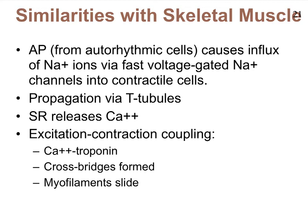We will look at those auto-rhythmic cells in the next video. When the action potential from the auto-rhythmic cells causes depolarization in our contractile muscle cells, it is due to the influx of sodium ions — primarily the influx of sodium ions. The action potential then propagates down into the T-tubules, where the T-tubules are in close contact with the sarcoplasmic reticulum.